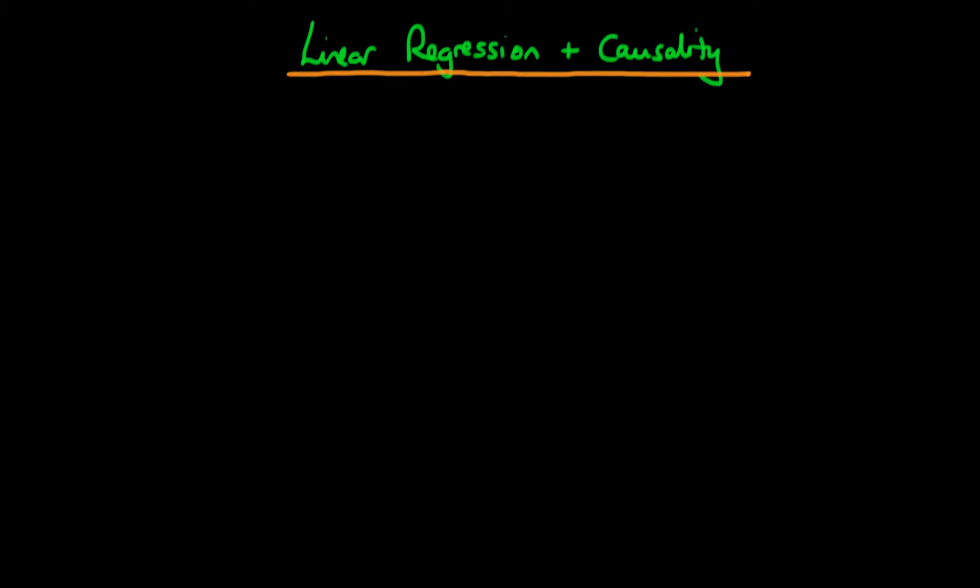In this video, I want to bring together what we talked about in the last few videos — the conditional independence assumption and continuous variables — to talk about causality in regard to linear regression.